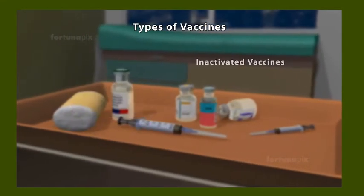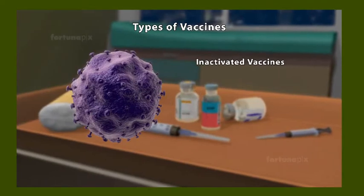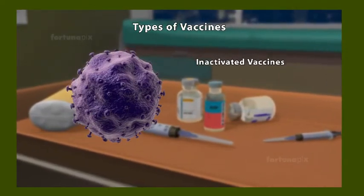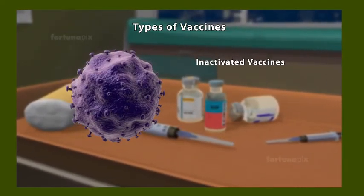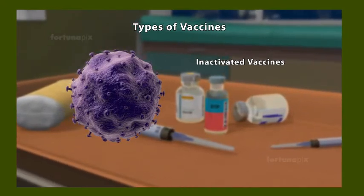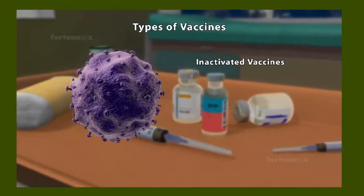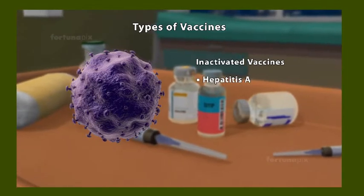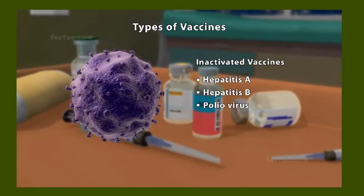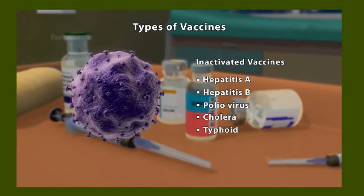Inactivated vaccines: Dead pieces of disease-causing microorganisms, usually bacteria, comprise inactivated vaccines. Examples of inactivated vaccines are Hepatitis A, Hepatitis B, Poliovirus, Cholera, and Typhoid.